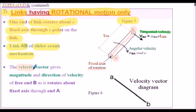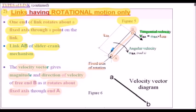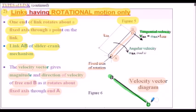The velocity vector gives us the magnitude and direction of the velocity as it rotates about the fixed axis. Figure 5 shows the velocity vector diagram indicating the direction of the tangential velocity of point B relative to A. Again, notice the lowercase letters defining the points on the velocity vector, and no arrowheads are drawn on the velocity vector diagram.